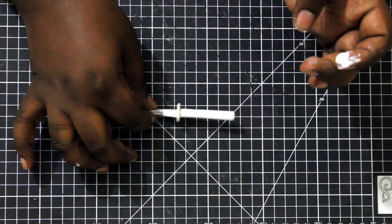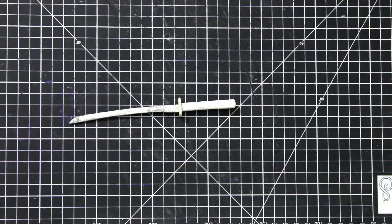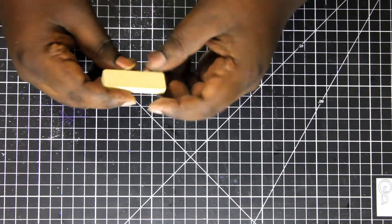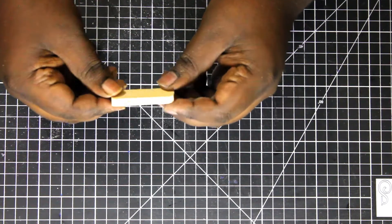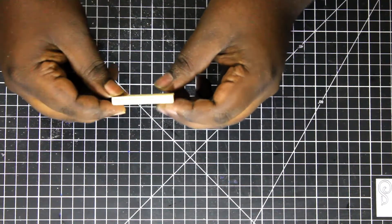While the handle and scabbard is drying let's make the stand to display the sword. For the base I am using three layers of popsicle stick.